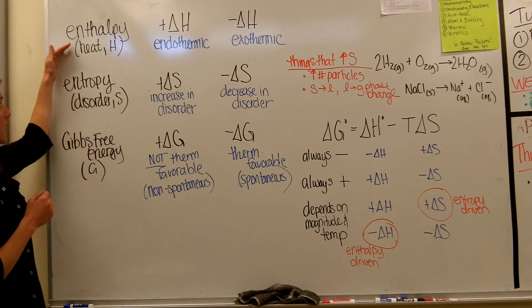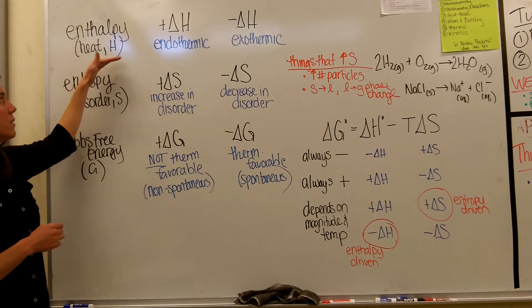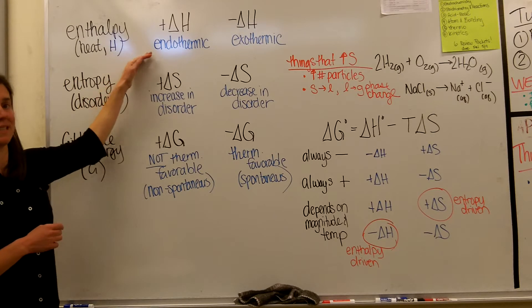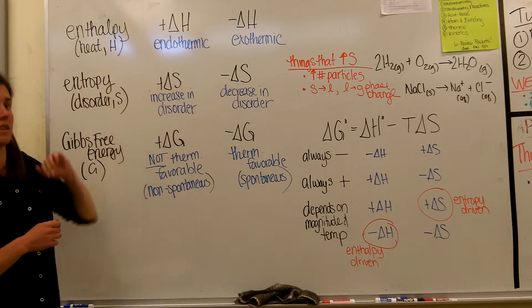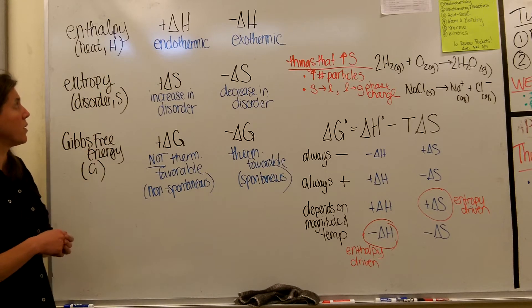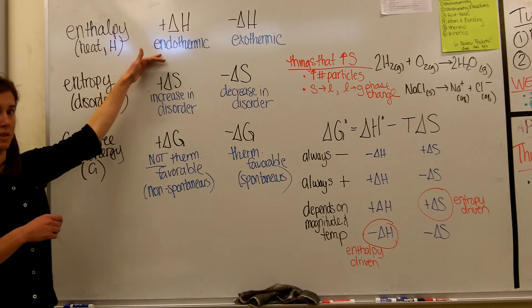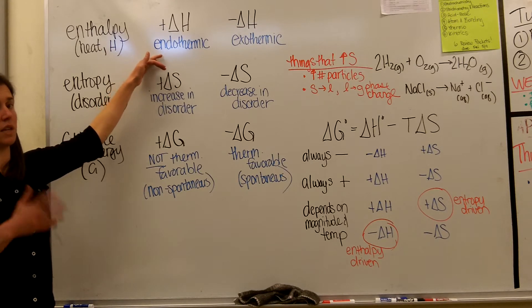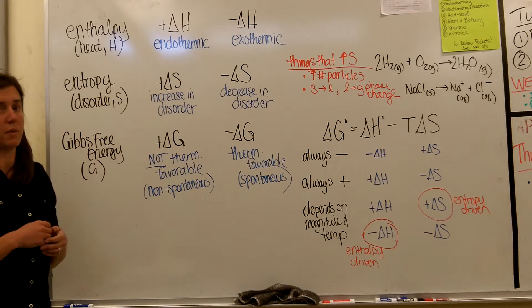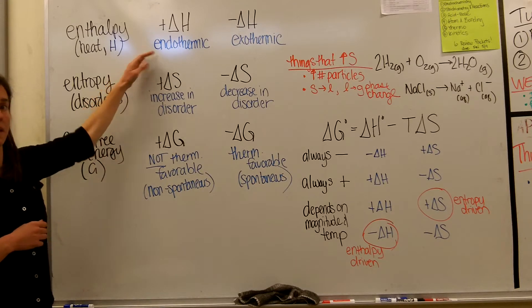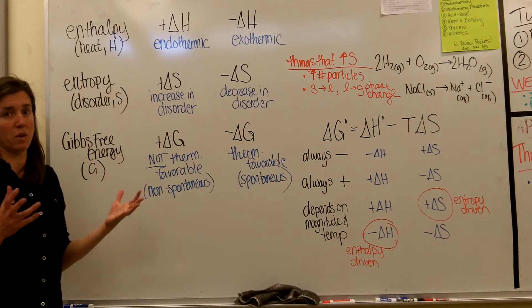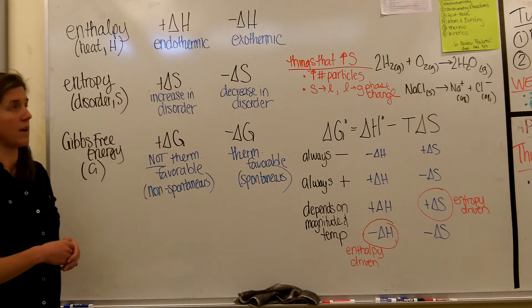The first one is enthalpy, and enthalpy refers to heat, so we use the symbol H. It's important to know the significance of the signs of the changes in these values. Delta stands for change, so if there is a positive delta H, that means there is a positive change in heat energy — our system has absorbed heat energy from the surroundings, and it would be endothermic. If you were to touch a reaction that was endothermic, it would feel cold to you because it would be absorbing heat from you, you being the surroundings.